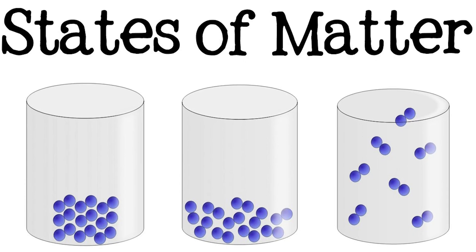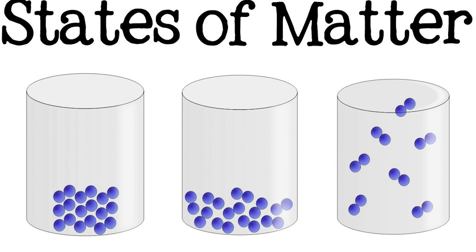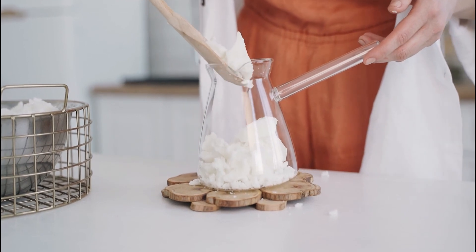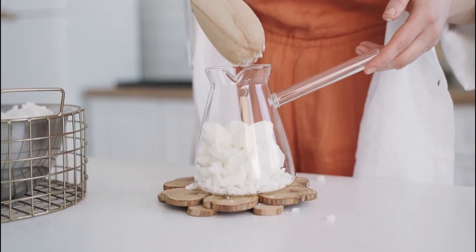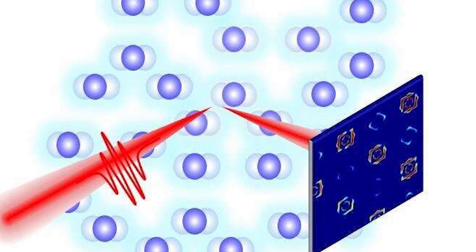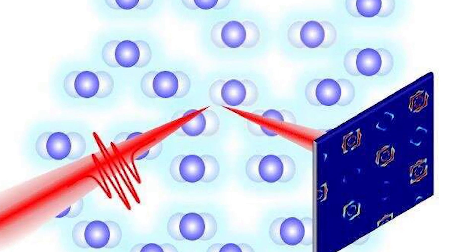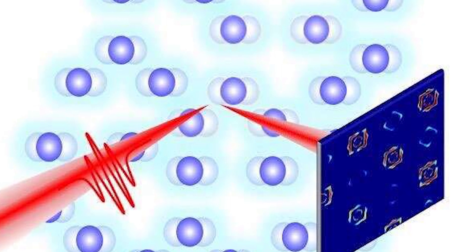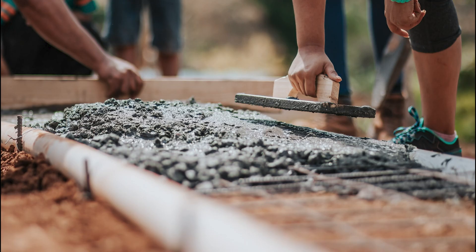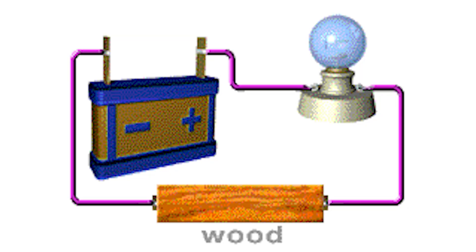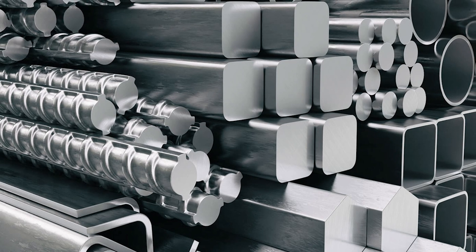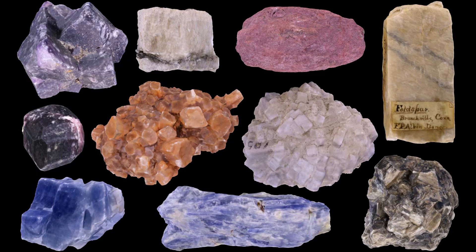Before we delve in properly, let's look at the various states of matter to further understand their nature. In a solid, the constituent particles — that is atoms, molecules, or ions — are tightly and compactly packed together and have a fixed shape and volume. The particles in a solid are in a state of low energy and vibrate about their fixed positions, but do not have enough energy to move around each other or escape the solid structure. Solids can have a range of physical properties, including hardness, brittleness, elasticity, and conductivity, depending on the arrangement and bonding of their constituent particles. Examples of solids include metals, ceramics, and most rocks and minerals.